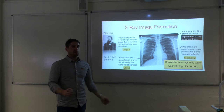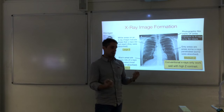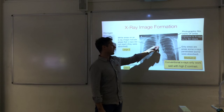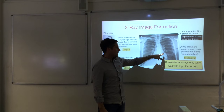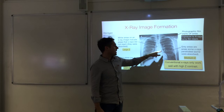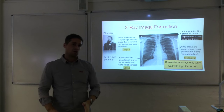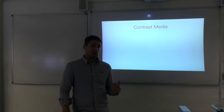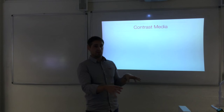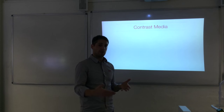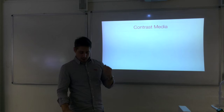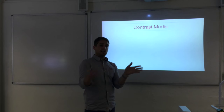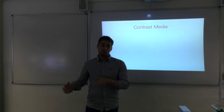Conventional x-rays only work well when there is a high contrast between the atomic numbers of different tissues. This works well between bone and soft tissue, making x-rays very useful for finding fractures in bone. But you can't use it to look at the intestines because they have a similar atomic number to surrounding soft tissue, so you can't pick out any problems there.